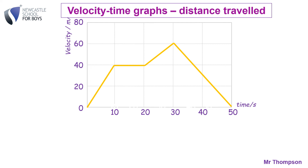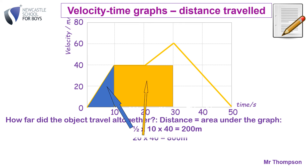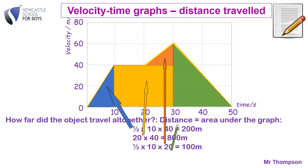What about the distance traveled? This is higher tier. The distance traveled or displacement is the area under the graph, so you work it out in sections. The first section is a triangle: area equals half base times height, so half of 10 times 40 is 200 meters. The second section is a rectangle: base times height, 20 times 40 is 800 meters. Another triangle: half of 10 times 20 is 100 meters. The final triangle: half times 20 times 60 is 600 meters. The total area under the graph gives the total distance: 1,700 meters.